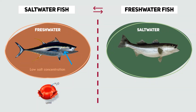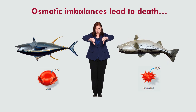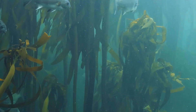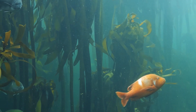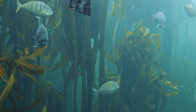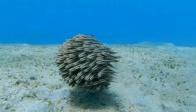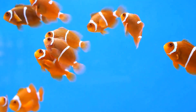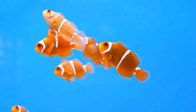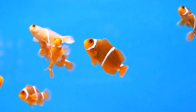Similarly, if a freshwater fish is placed in saltwater, the salt concentration outside the fish body is higher than that inside its body. Water will move out of the fish body through osmosis, causing dehydration and disrupting the fish's internal balance. The loss of water can affect the fish's cells and organs, leading to dehydration and potentially death. In summary, the physiological adaptations of saltwater fish and freshwater fish are specifically suited to their respective environments, and the differences in salt concentration and osmotic balance make it challenging for these fish to survive in the opposite type of water.